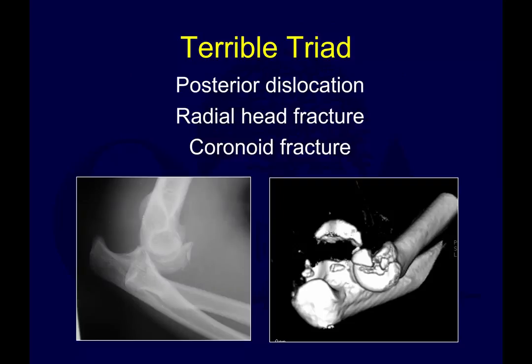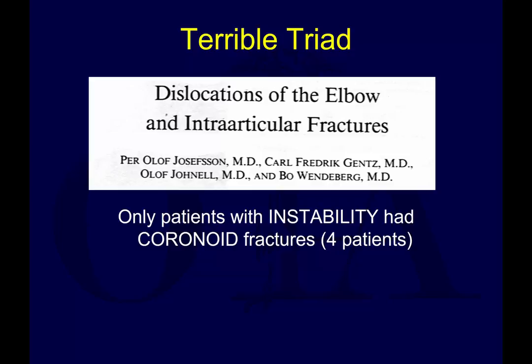So what is the terrible triad? By definition, the terrible triad of the elbow is posterior elbow dislocation, radial head fracture, and a coronoid fracture. Shown here, for example, you have a radial head fracture and maybe a coronoid tip fracture with a fragment. On the 3D recon you can clearly see this as well. This typically occurs with posterolateral rotatory instability, where the lateral side fails first and then you go in a circle with the MCL failing last. It's going to do poorly if not treated with proper operative stabilization.